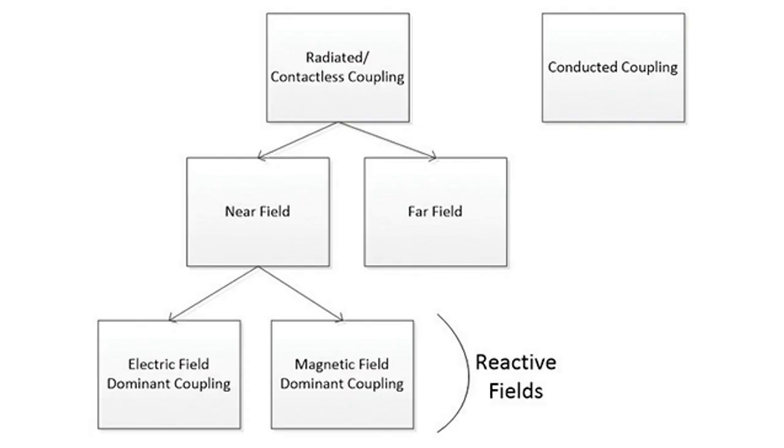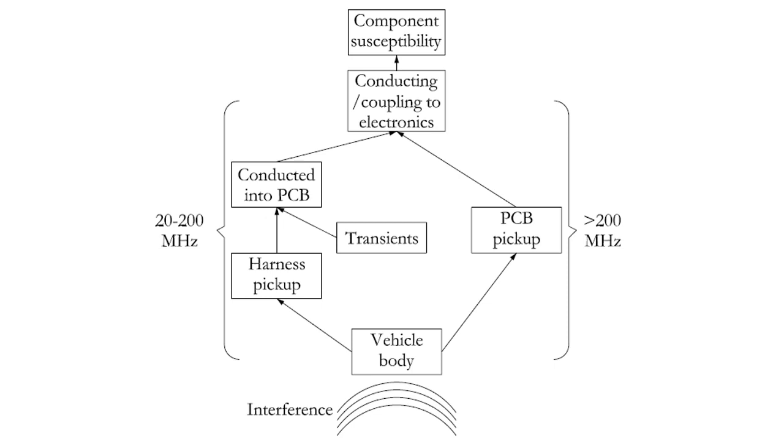There are two ways for electromagnetic fields to be coupled into vehicle electronics. The first way is coupling into the electronic system via printed circuit board tracks or internal wiring.